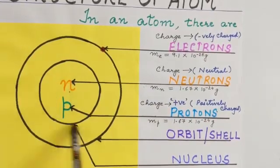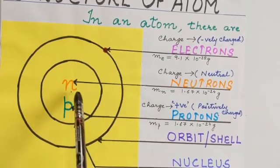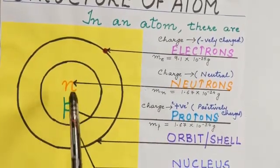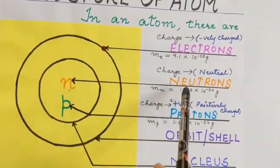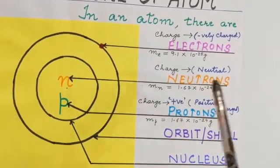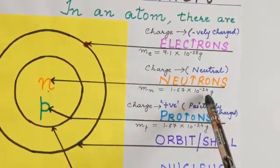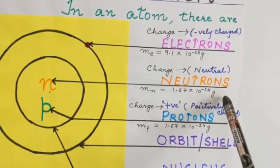In the center of the atom, we have a nucleus which contains neutrons and protons. Neutrons are the subatomic particles present inside the nucleus of an atom carrying no charge. They are neutral and have a mass of 1.67 into 10 to the power of minus 24 grams.